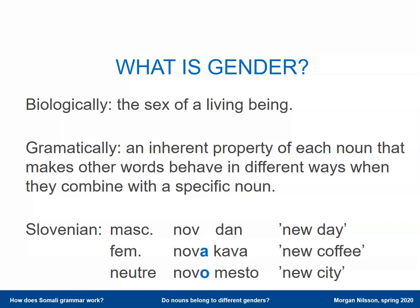And the neuter gender ends in o — novo, mesto. So you can tell very easily which gender the noun belongs to, and then also what form the adjective has to take.